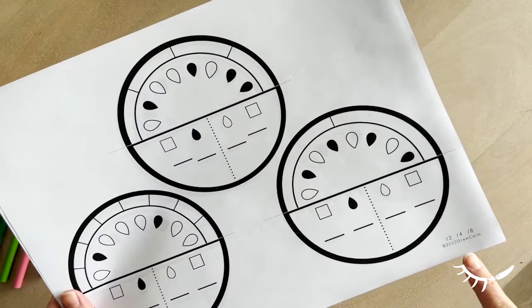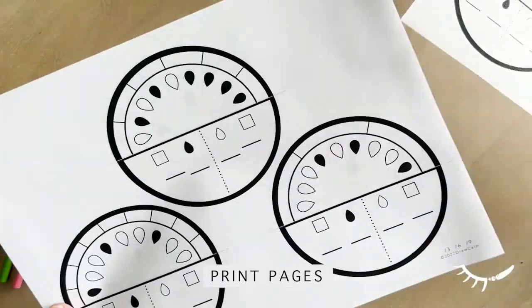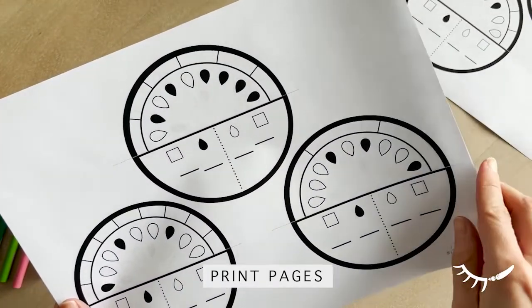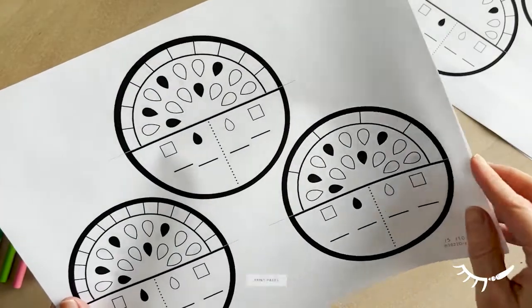First, print out the watermelon slices page. They're available in a variety of segments indicated at the bottom of the page. Each page has three different slices.